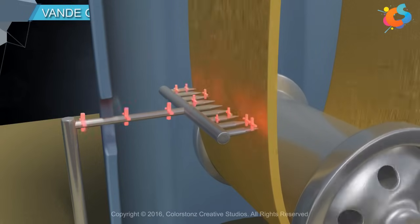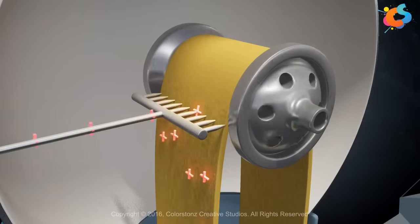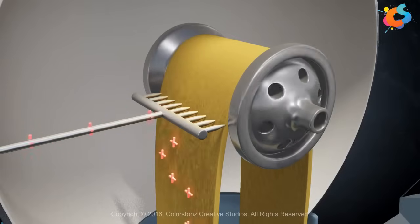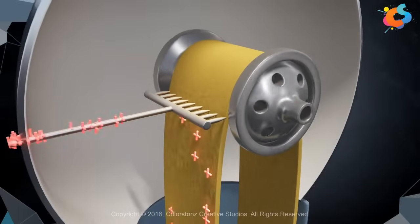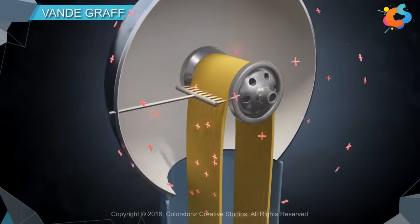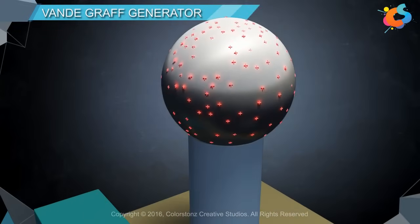Charges on the belt are carried upwards and are collected by the receiver comb on the top of the generator. Since the upper comb is connected to the hollow conductor, the charge gets transferred to the hollow sphere.